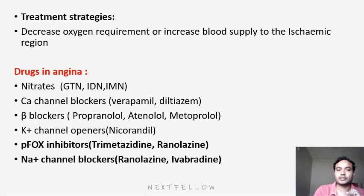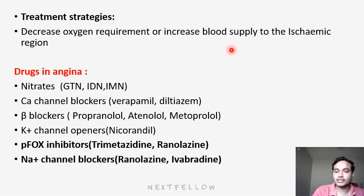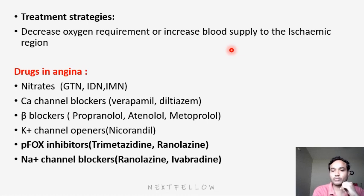What is the main treatment strategy for angina pectoris? Mainly, either decrease oxygen requirement to the tissue or we can increase the blood supply to the ischemic region. To decrease oxygen requirement, decrease heart activity — that means decreasing heart rate, heart contractions, and heart burden. To increase blood supply to the ischemic region, we dilate the artery, leading to more blood supply to the distal parts and decreased pain. Drugs that decrease heart rate and dilate arteries will be beneficial in treating angina pectoris.